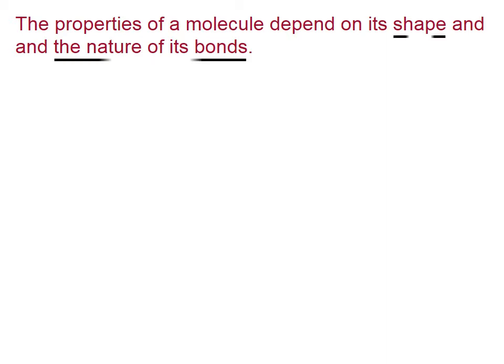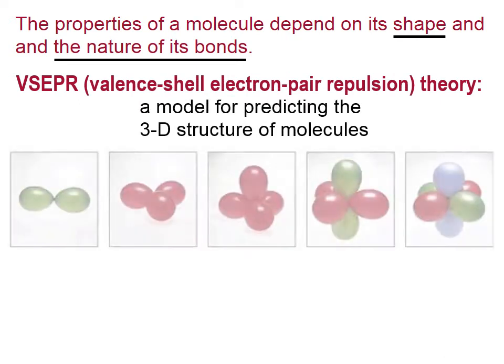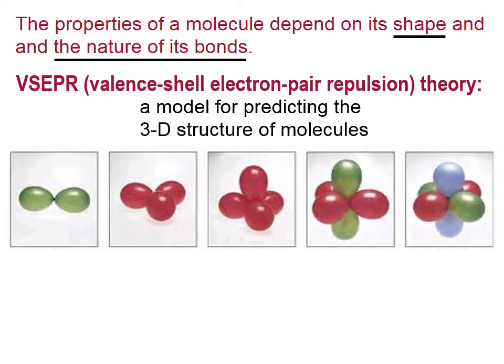The properties of a molecule depend on its shape and the nature of its bonds. In this lesson, we're going to begin our look at the VSEPR theory, which is an acronym for Valence Shell Electron Pair Repulsion Theory, which is a model for predicting the three-dimensional structure of molecules.